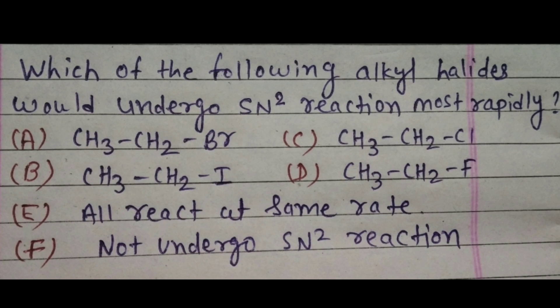But the thing is that the leaving group is different in all the substrates. In A the leaving group is bromo, in B the leaving group is iodo, in C the leaving group is chloro, and in D the leaving group is fluoro.